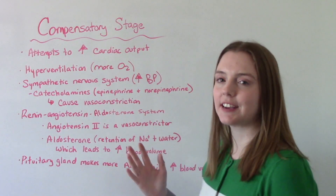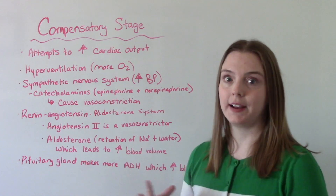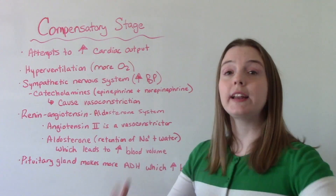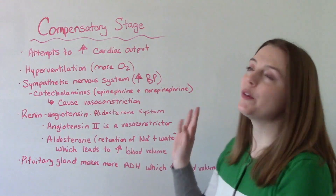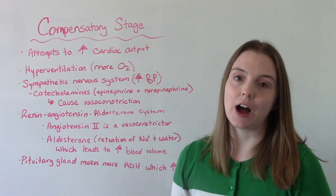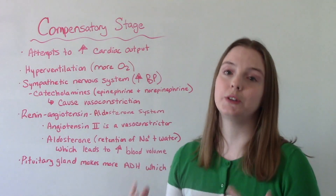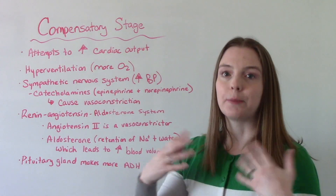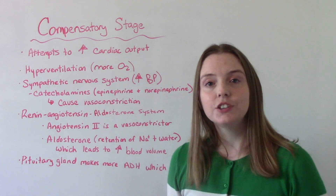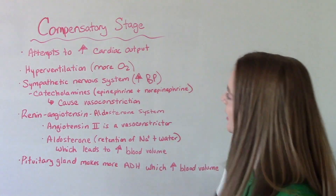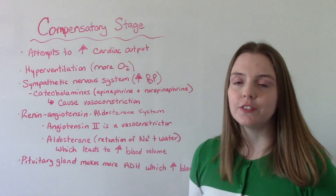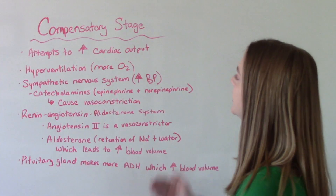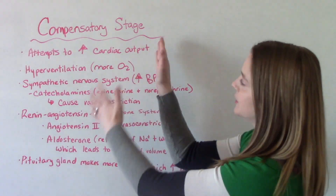The compensatory stage is next. This is when the body starts to recognize that all of these changes are happening — we've switched to anaerobic metabolism, we have all this extra lactic acid — this is not good, we need to fix the problem. The goal of the compensatory stage is to increase cardiac output. The first thing the body does is hyperventilate, breathing rapidly, because we don't have enough oxygen and we're trying to get more into the body. Next, the sympathetic nervous system kicks in, primarily focused on increasing blood pressure, heart rate, and cardiac output.